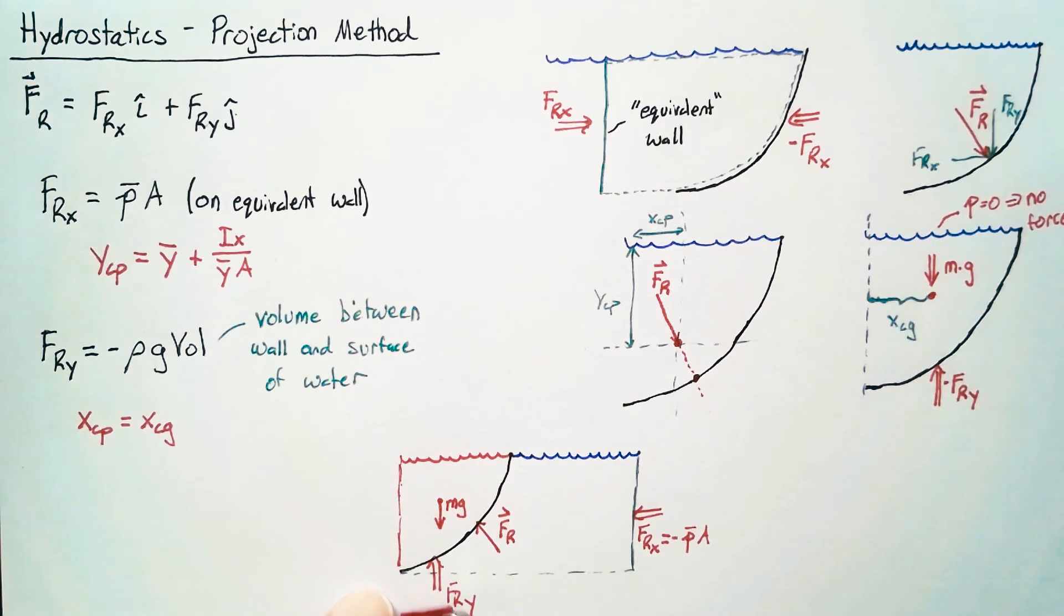But of course the force on the wall is going to be pushing up. So whenever you're doing it this way, you need to make sure that the forces and the directions that you choose are going to make sense. The force in the y direction here is just going to be rho times g times vol and that's going to be positive this time because it's going to be pushing up.